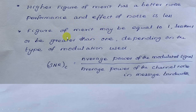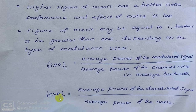It depends on the type of modulation used. Figure of merit depends upon the signal to noise ratio. In a communication system we have a transmitter, channel, and receiver. The channel signal to noise ratio depends on the transmitter and the channel — it is the ratio of the average power of the modulated signal to the average power of the channel noise in the message bandwidth.